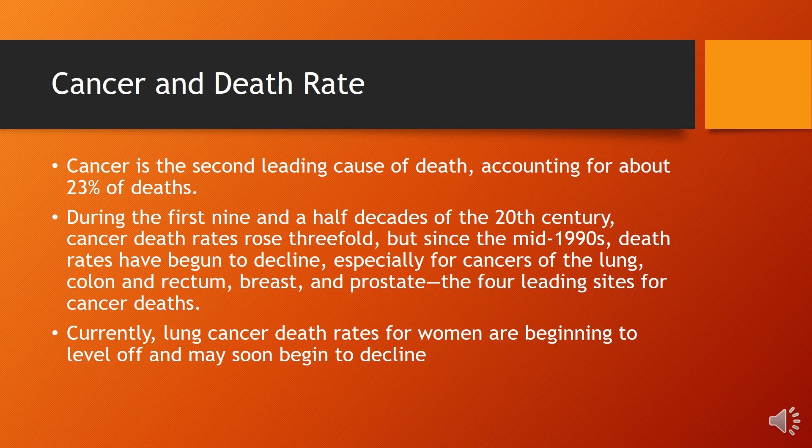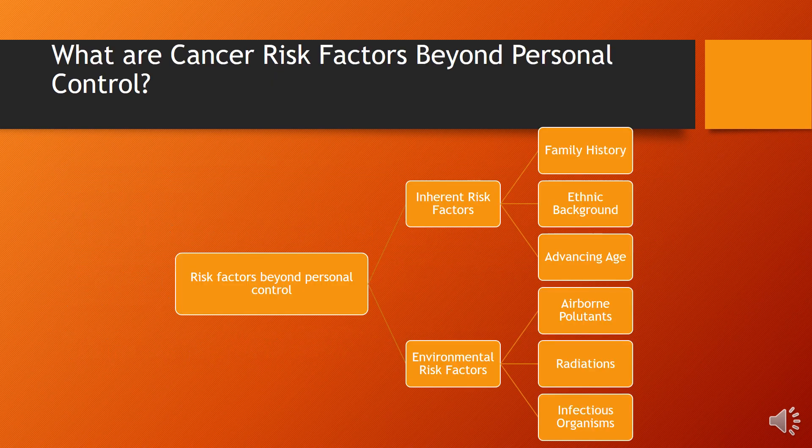Cancer is said to be the leading cause of death — around 23% of death rates are because of cancer. During the first nine and a half decades of the 20th century, death rates rose threefold, but since the mid-1990s death rates have begun to decline, specifically because of different treatments available and changes in individual lifestyles. The four leading sites for cancer death are lungs, colon and rectum, breast, and prostate. Currently, lung cancer death rates for women are beginning to level off, while breast cancer is increasing for women.